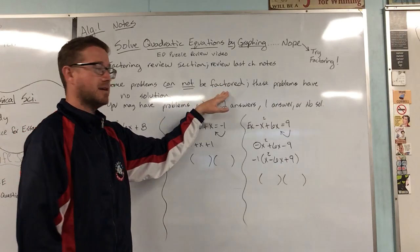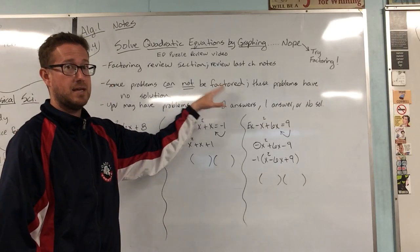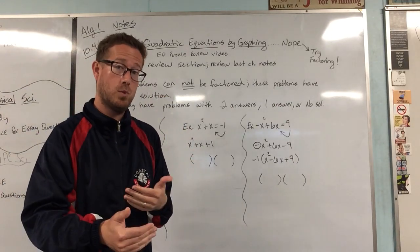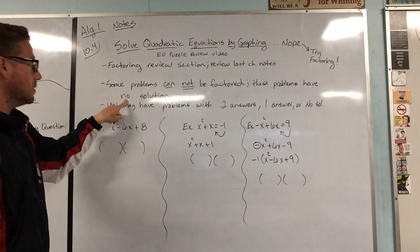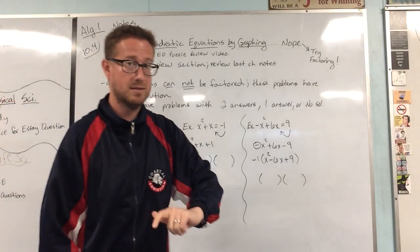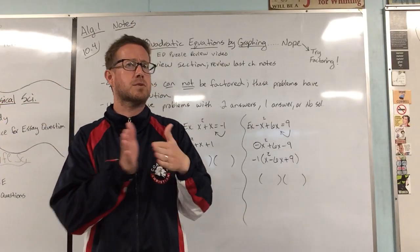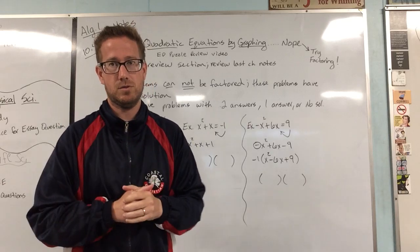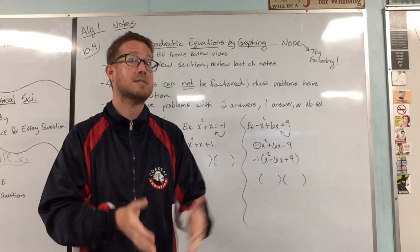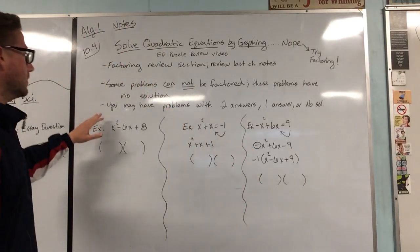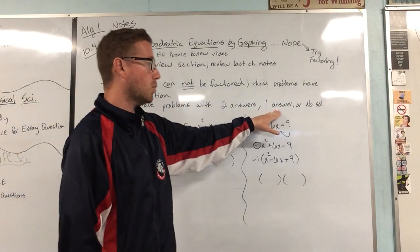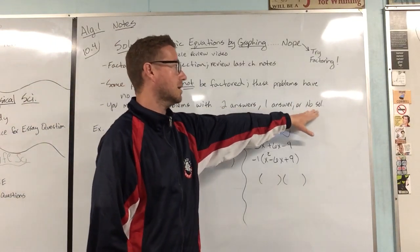All right, some problems by the way cannot be factored. So if that's the case, you get a problem and you're saying, 'I don't get it, why isn't it working?' It could be because it's not meant to work, meaning that you'll have no solution. That's something to be aware of. Now for some of you guys, that doesn't mean that just because it didn't work the first time doesn't mean that immediately you say it's no solution. You still need to fully exhaust your effort putting into factoring that problem to see if it truly is no solution. So that being said, you may have problems with two answers, meaning two numbers, or just one number, or again no solution where it cannot be factored.